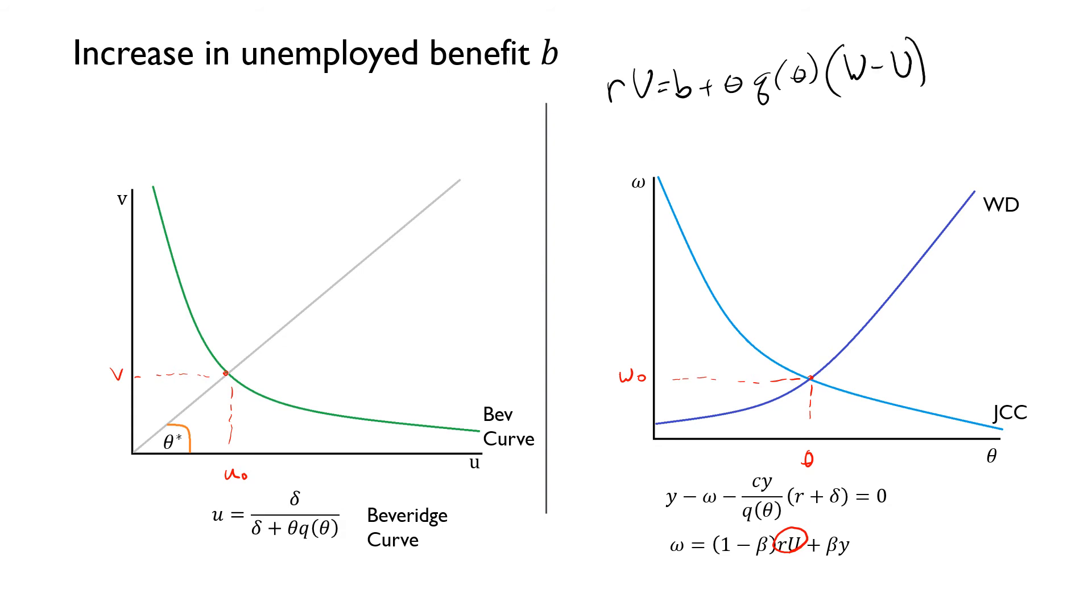our unemployed Bellman is equal to b plus theta Q(θ) times (W minus U), meaning our worker picks up an unemployed benefit in his state. And he has an expected value, which is denoted by their probability of finding a job and picking up the value of W and giving up U here. When we see an increase in b,